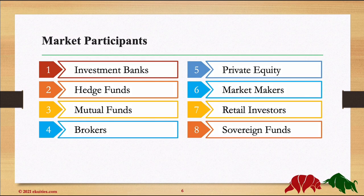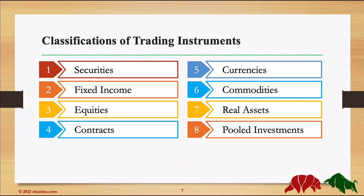Next, what are the classifications of trading instruments available? These are mainly divided into eight different categories, and we'll see that some securities are common between more than one classification. We have: securities, fixed income, equities, contracts, currencies, commodities, real assets, and pooled investments. Let's go over each one of them.